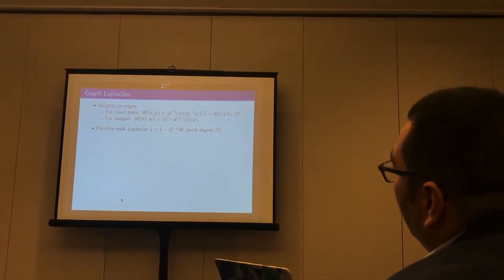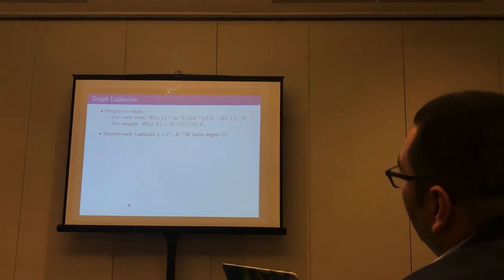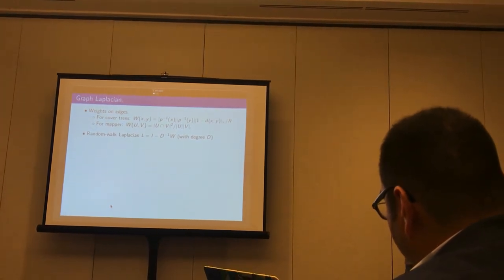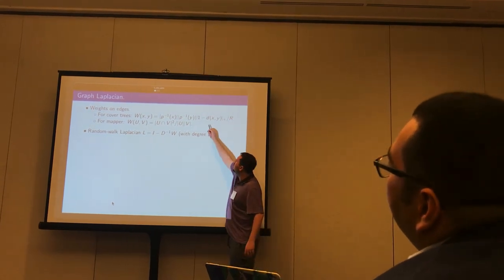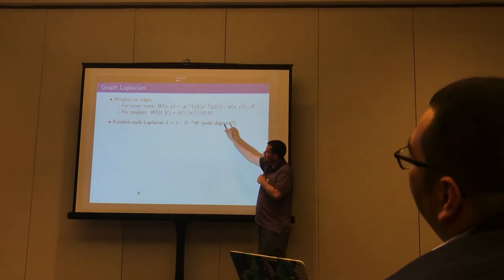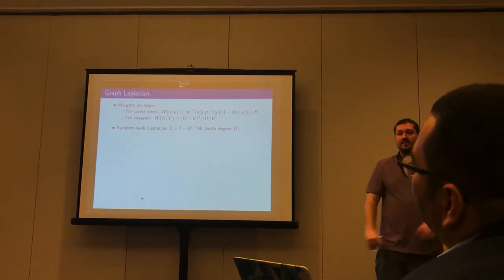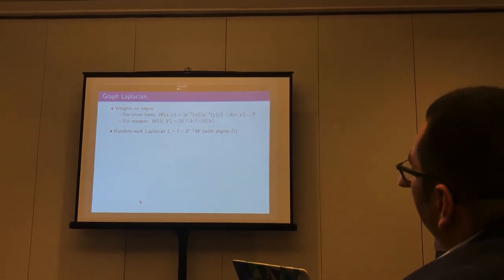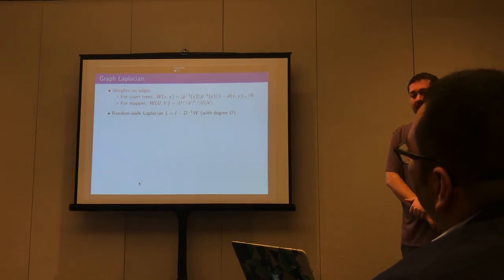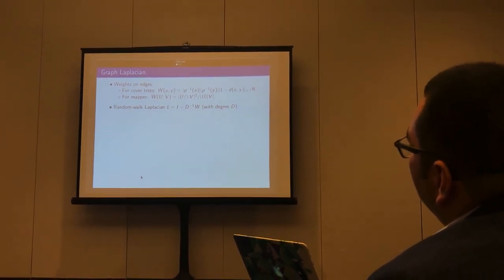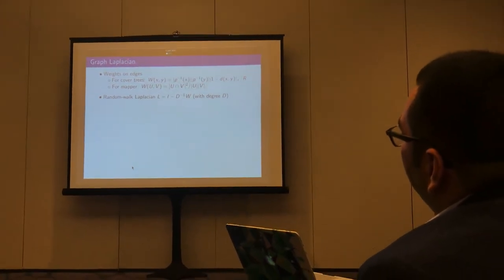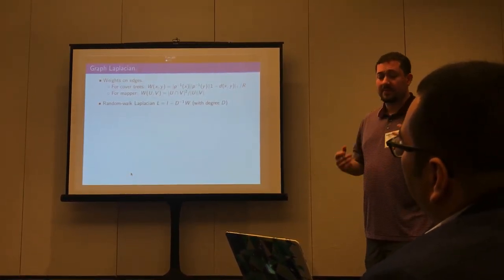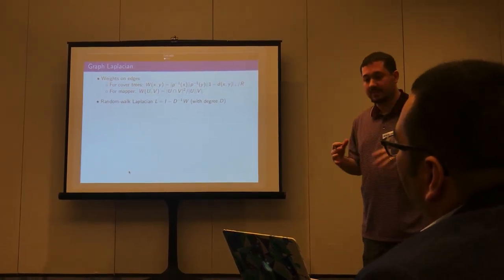There is some detail on how edge weights are defined to build the Laplacians. For cover trees, a kernel-based weighting uses the positive part of distance, combined with p-inverse of x and p-inverse of y — measuring how much data is in each cover set — to weight edges. This is necessary because relating eigenvectors across Laplacians at different levels requires careful definition of the Laplacians. For Mapper, where there's less specificity with cover sets, the intersection size is used directly.